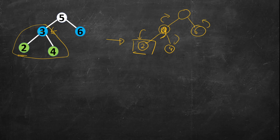Node 3 returns 9 and node 6 returns 6, giving 9 + 6 + 5 = 20 for the root. The tree now represents the cumulative sums. Using this, we can calculate the tilt: for node 5, left part is 9 and right is 6, so tilt is |9 - 6| = 3. You can verify: 4+2+3=9 on the left and 6 on the right.